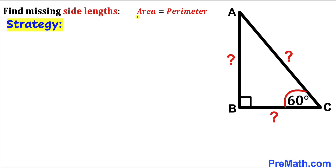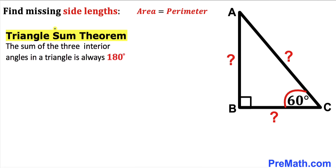We are going to calculate the area of this given right triangle, and likewise we are going to calculate the perimeter of this triangle as well. Then we are going to equate them to solve for the missing side lengths. Now let's recall the triangle sum theorem.